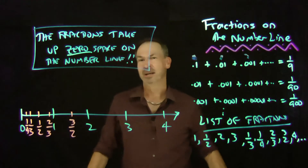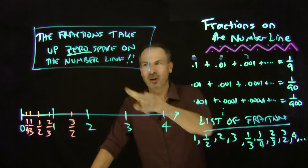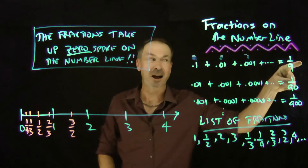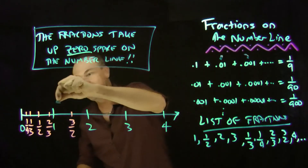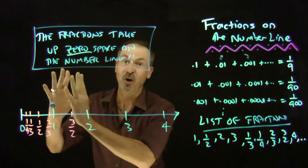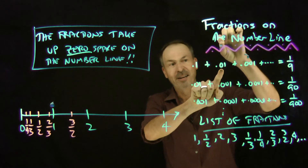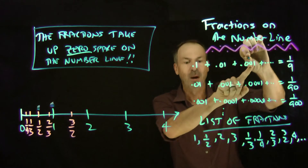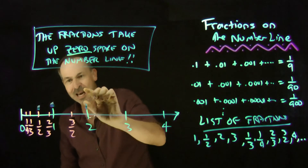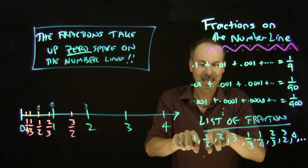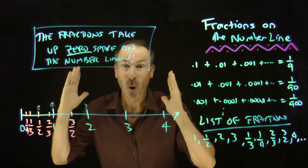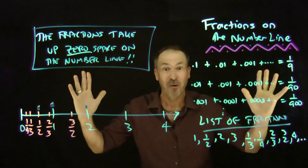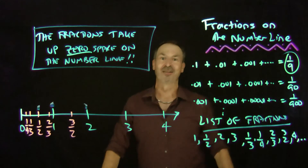Now let me show that these fractions take up at most 1 ninth of an inch of space on the number line. I'll take the pieces of ribbon that add up to 1 ninth of an inch. I'll take the first piece — 1 tenth of an inch long — and cover the number 1 with it. That covers more than just number 1, so I'm overdoing it. Then take the next length — 1 hundredth of an inch — and cover the second fraction, 1 half. Then a thousandth of an inch to cover the third fraction, and so on. Covering all the fractions in order uses just 1 ninth of an inch of ribbon total. So the fractions take at most 1 ninth of an inch of space on the number line.